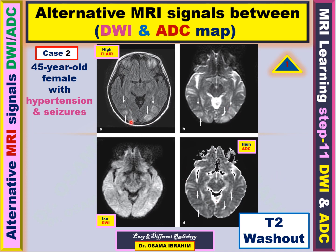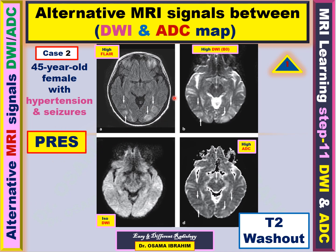This is confirmed by the FLAIR MRI sequence, which also appeared high in the posterior occipital lobe. From the history, location of lesions, and edema characteristics due to T2 washout, PRES — posterior reversible encephalopathy syndrome — is highly suggestive, and this case was diagnosed and confirmed as PRES.